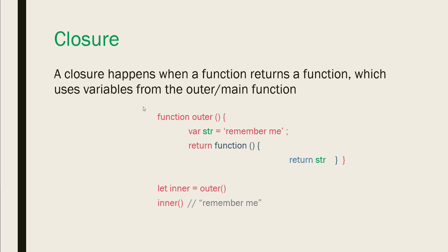When we invoke this outer function, it returns the anonymous function — just a function definition. Then later when we invoke that inner function, it returns 'remember me', even though it was defined in the outer function. This happens through closures. To have an even better understanding, let's jump into VS Code and do an example.